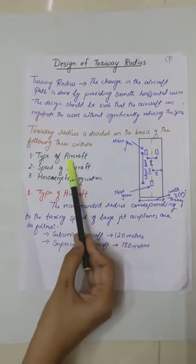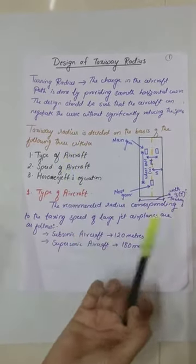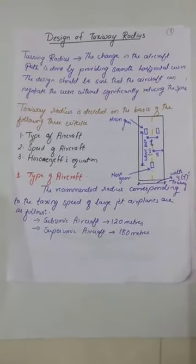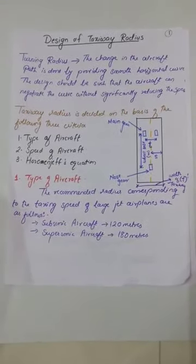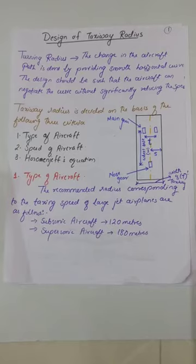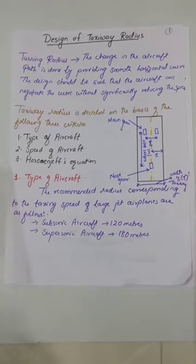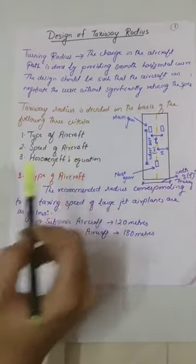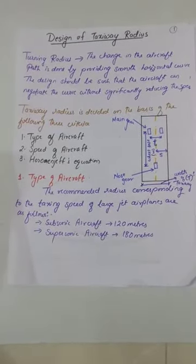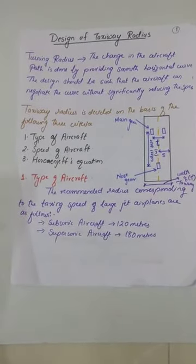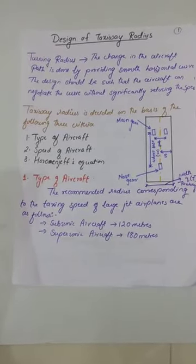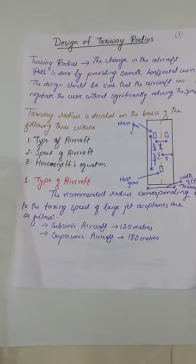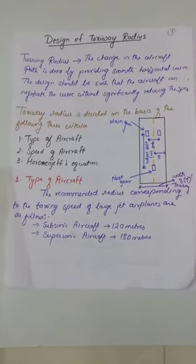The first criteria is type of aircraft. If the aircraft is of larger size, say Boeing or Airbus, you will require greater radius. And for smaller aircrafts, you will require less radius. The next criteria is the speed of aircraft. If the speed of aircraft is more, so to negotiate that speed, you will require greater radius. And if the speed of the aircraft is less, you will require less radius.